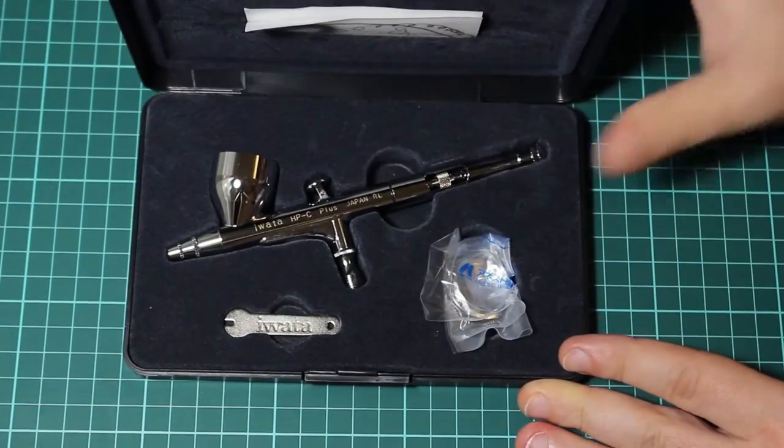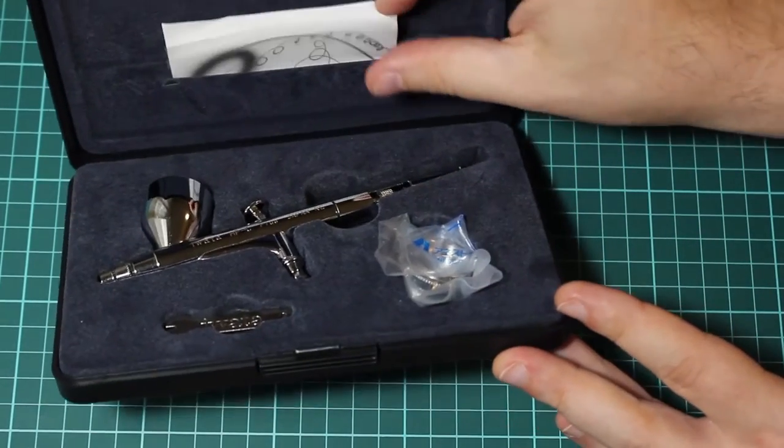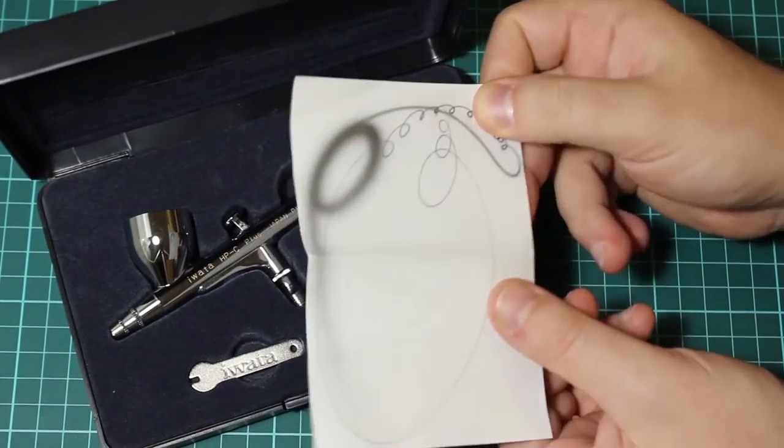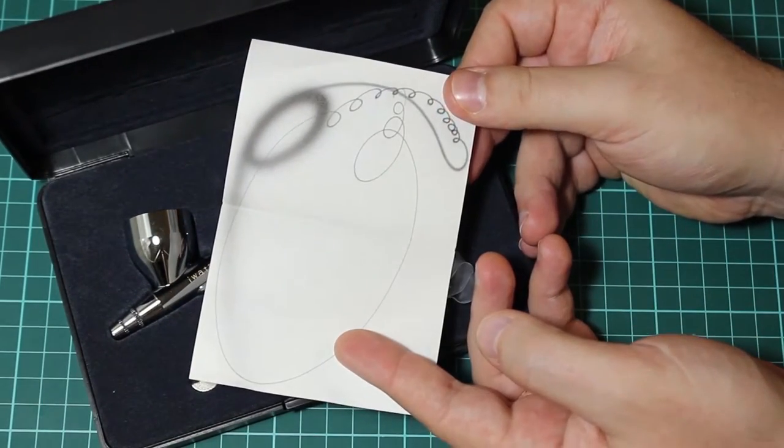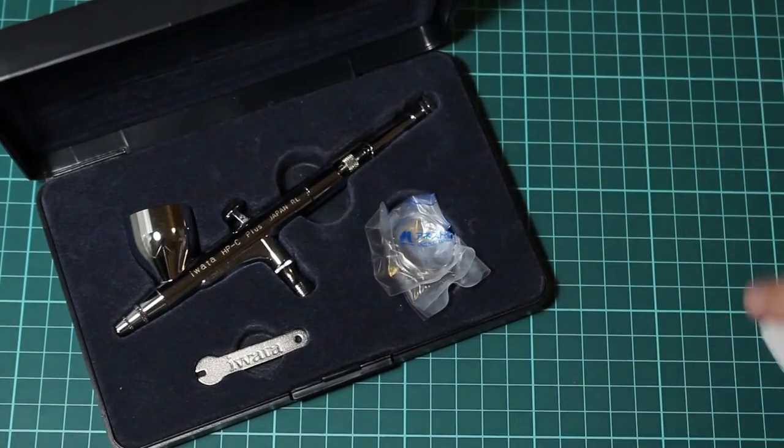Our item of interest looks like this. There is an airbrush inside, a wrench for the nozzle and a cap. There is also a small leaflet of a test example of this particular airbrush.